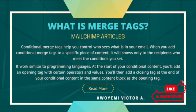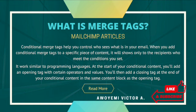Now, what are merge tags? According to Mailchimp, conditional merge tags help you control who sees what is in your email. When you add conditional merge tags to a specific piece of content, it will show only to the recipient who meets the conditions you set. It works similar to programming languages — at the start of your conditional content you add an open tag with certain operators and values, then add a closing tag at the end.